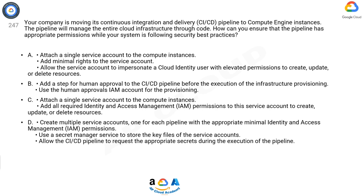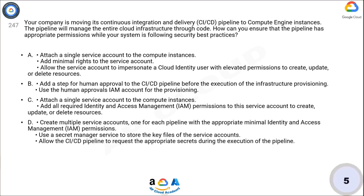Option D: Create multiple service accounts, one for each pipeline, with the appropriate minimal IAM permissions. Use Secret Manager to store the key files of the service accounts, and allow the CI/CD pipeline to request the appropriate secrets during execution of the pipeline. Now think for five seconds for the correct answer.